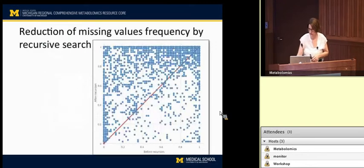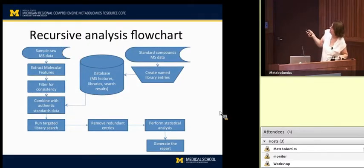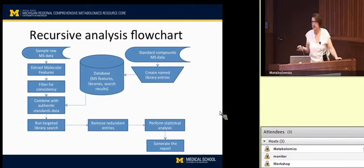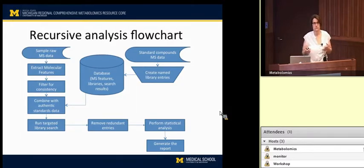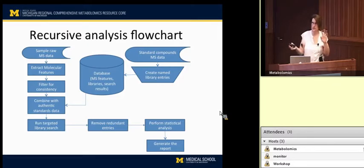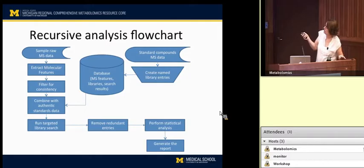At that point we have extracted the molecular features. The next step is to go across all samples and filter for the consistency of these features. You'd like to see that feature in at least 70% of all the samples in one group. It doesn't have to be present in all groups because it may be something that's only in one set versus the control. We do some filtering at this point to reduce the dataset again.